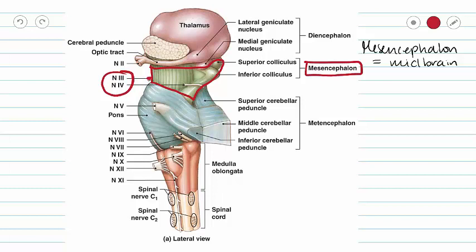Cranial nerve 3 emerges from the middle of the mesencephalon right above the pons, and cranial nerve 4 emerges from the posterior aspect of the mesencephalon and wraps around towards the anterior aspect. Cranial nerve 3 is the oculomotor nerve and cranial nerve 4 is the trochlear nerve — both control eye movements.